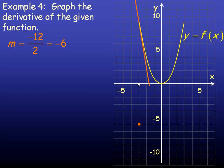Now, the x-coordinate of that point is negative 3, so I'll put a dot—my y-value is the derivative here, at negative 6.